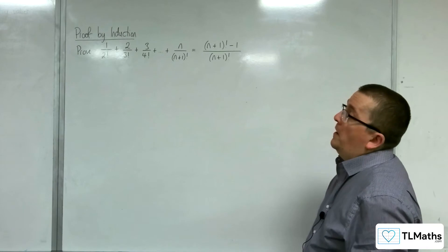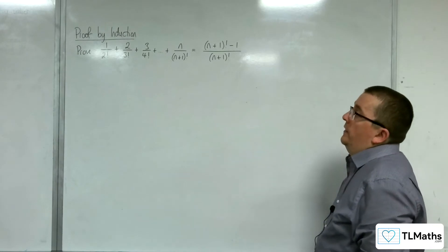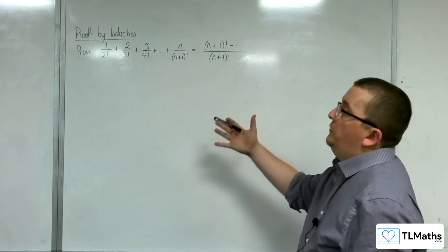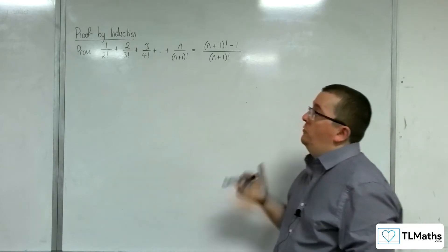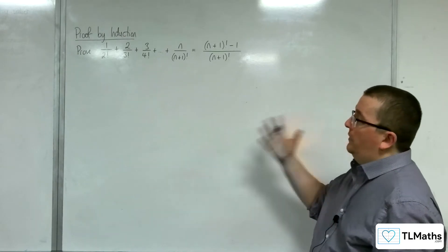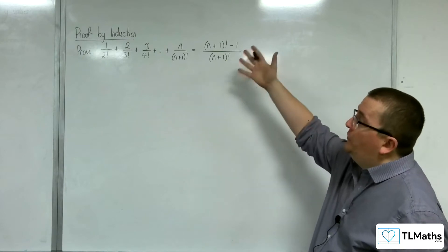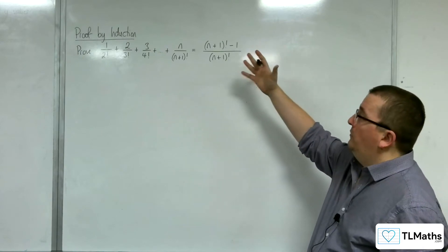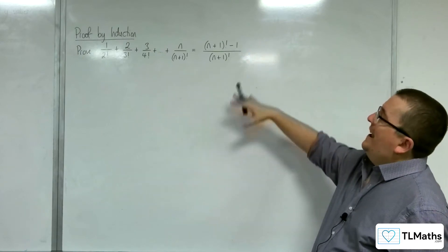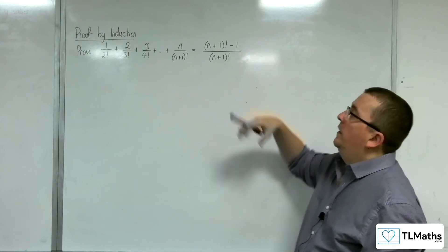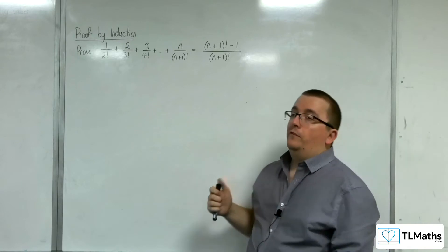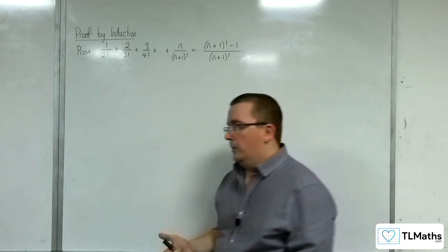In this video, we're going to prove by induction that 1 over 2 factorial plus 2 over 3 factorial plus 3 over 4 factorial plus dot dot dot up to n over n plus 1 factorial is equal to n plus 1 factorial take away 1 over n plus 1 factorial.